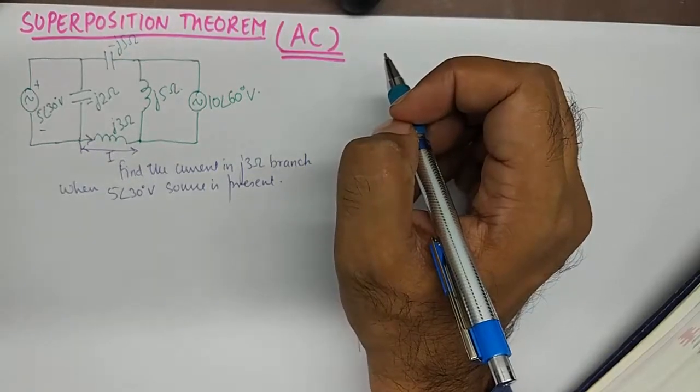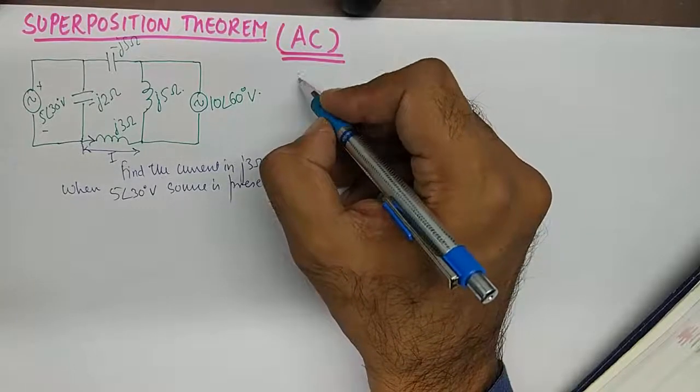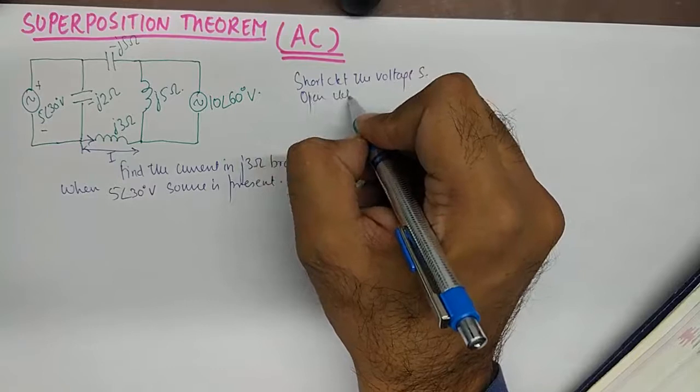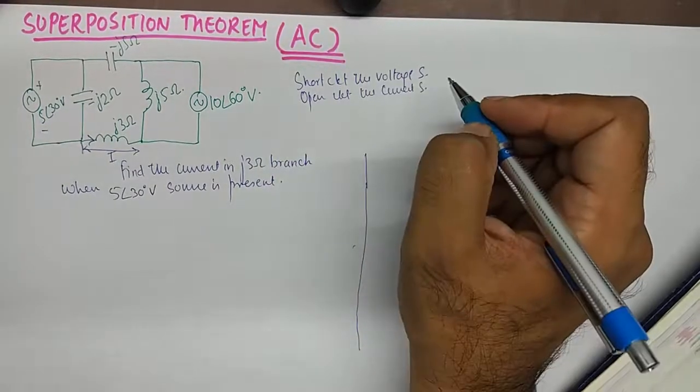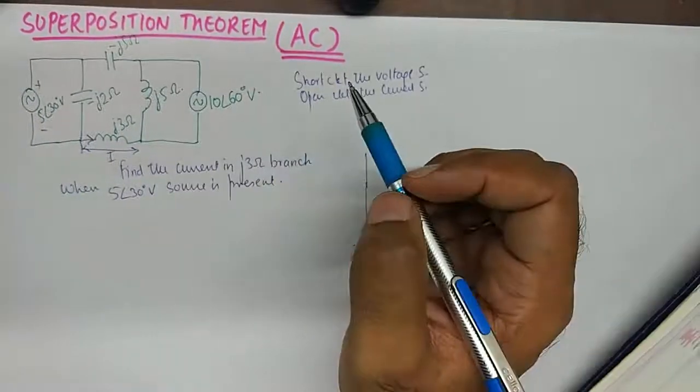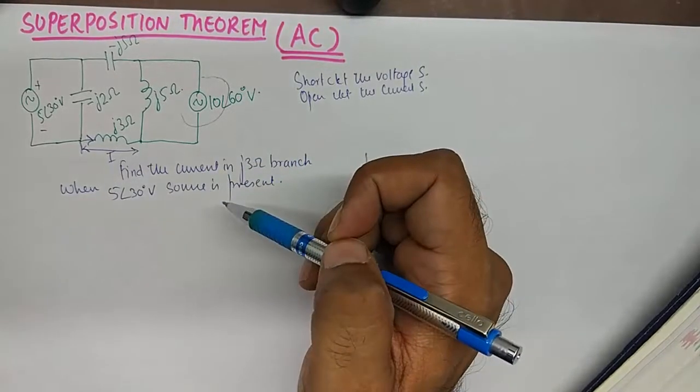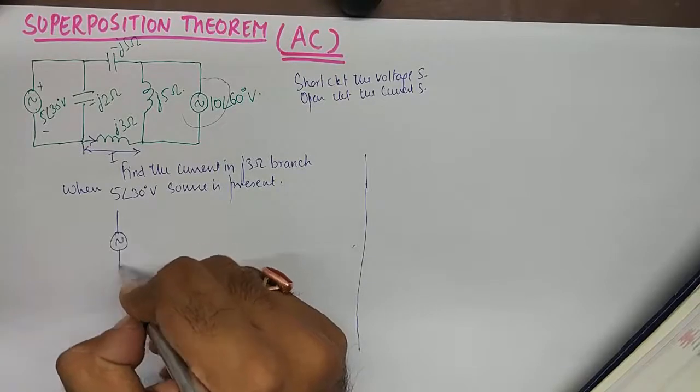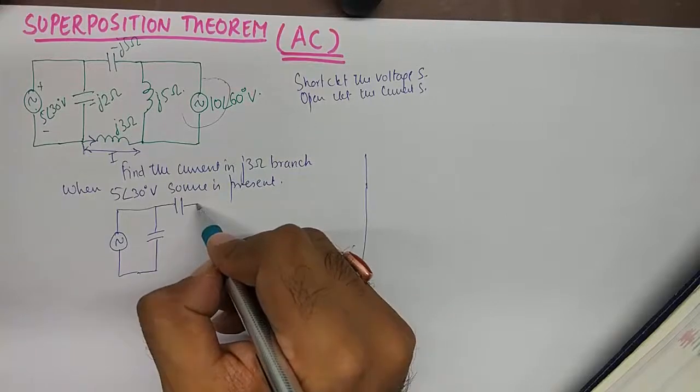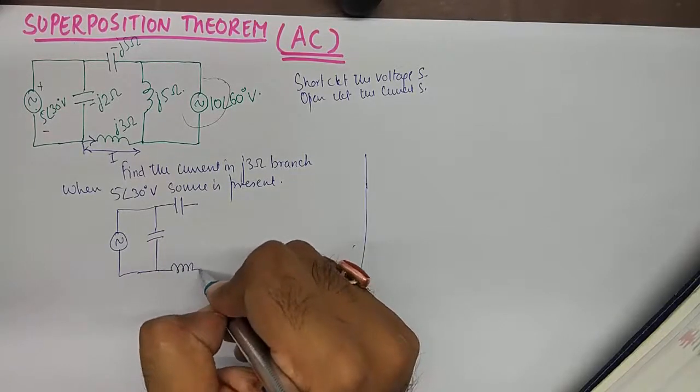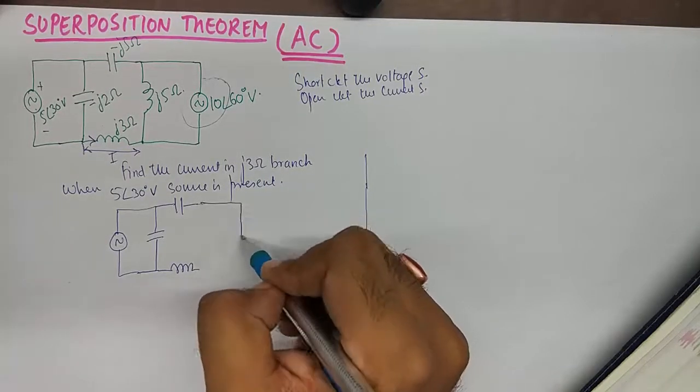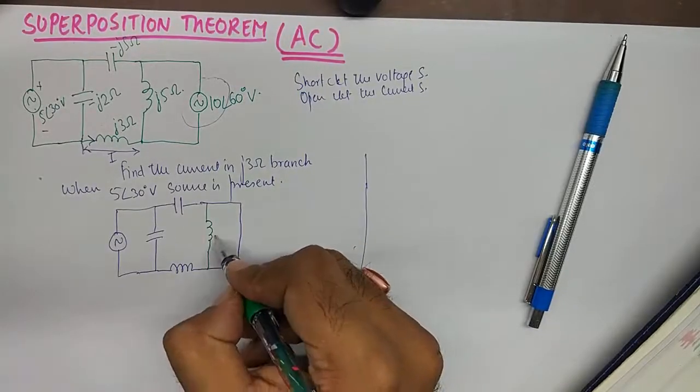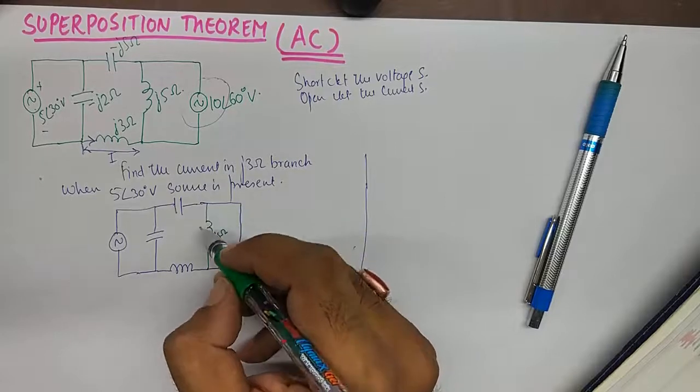That is discussed in the basics of superposition tutorial also. So we'll short circuit the voltage sources, all the other voltage sources. And we'll open circuit current sources. But we do not have a current source here. So the other voltage source which is this one will be short circuited when I'll choose to select this one in the network. So I'm left with this circuit now. And it is immaterial to draw this branch now because I'm going to anyway short the branch parallel to this. So when I'll short this branch, this J5 Ohm impedance branch will go away anyway.